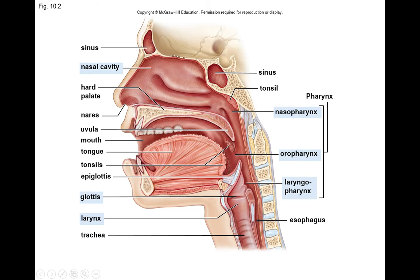The uvula presses against the back wall. Then we have the oral pharynx where the food is, and then the laryngopharynx right behind the larynx, where the air is directed down into the airway.